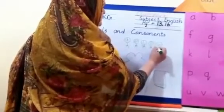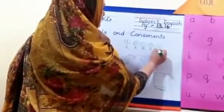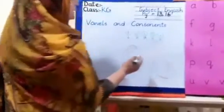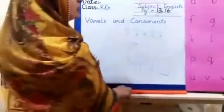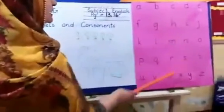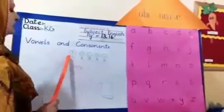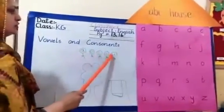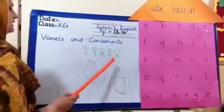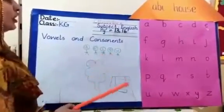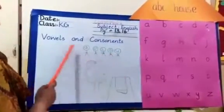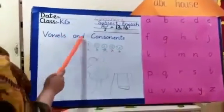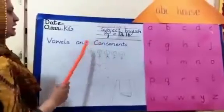Yes, dear students. The five letters that wanted to go outside are A, E, I, O, U, and they are called vowels. Yes, dear students, our topic is vowels and consonants.